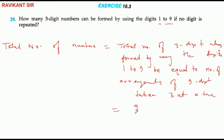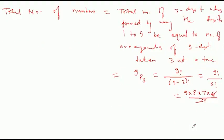This equals 9P3, which is 9 factorial divided by (9 minus 3) factorial, equals 9 factorial by 6 factorial. This gives us 9 into 8 into 7 into 6 factorial by 6 factorial, which equals 504.